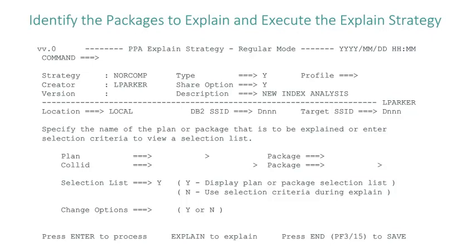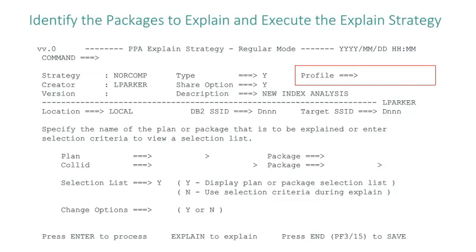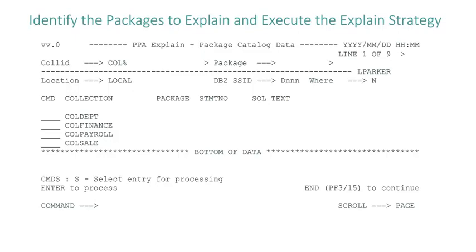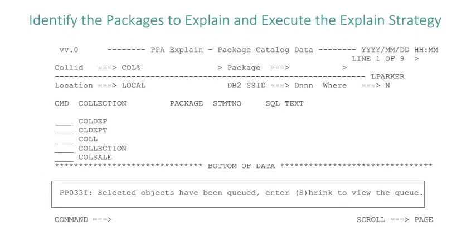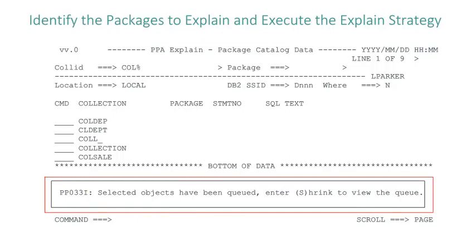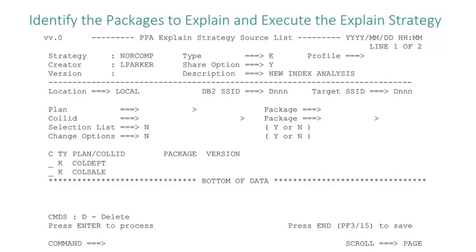Lynn reviews the header and panel fields and verifies that the profile field remains blank. She is going to use the CA defined @COMPARE BASE profile, which she will specify when she explains her SQL sources. Lynn has grouped her packages into collections all prefixed with COL, so she types COL% in the collection ID field. She verifies that the selection list is set to Y and sets the change options to N for no, then presses enter. The explain catalog data panel displays. Lynn types an S in the line command field next to the names of the collections she wants to explain and presses enter. A message displays indicating her collection ID is queued. Lynn presses F3 and the explain strategy source list appears. She confirms the selected collections are added to her explain strategy and presses F3 to return to the explain strategy services panel.